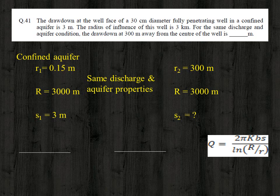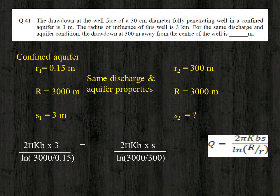Since the discharge for both conditions is the same, we equate the two expressions: 2πkb × 3 / ln(3000/0.15) = 2πkb × S2 / ln(3000/300). Solving, we get S2 as 0.71 meter.